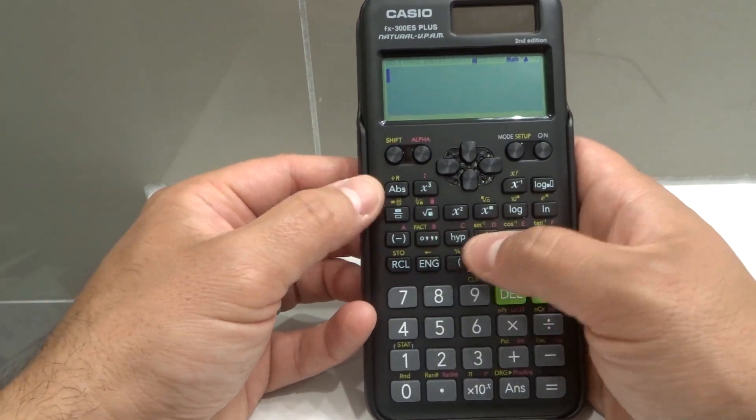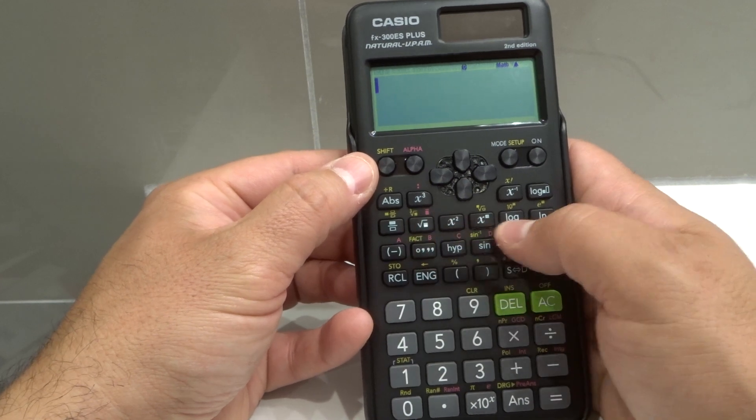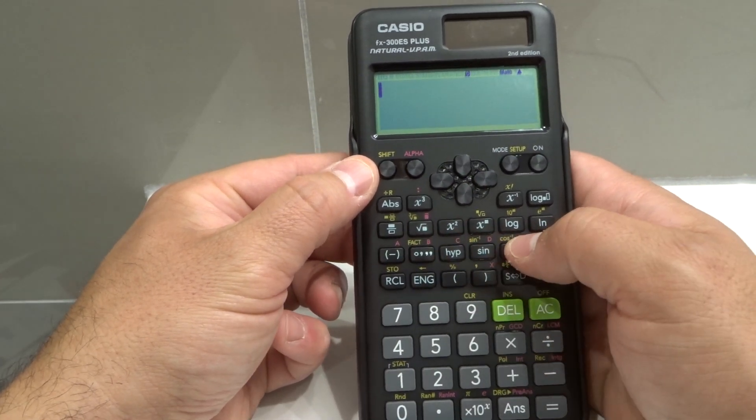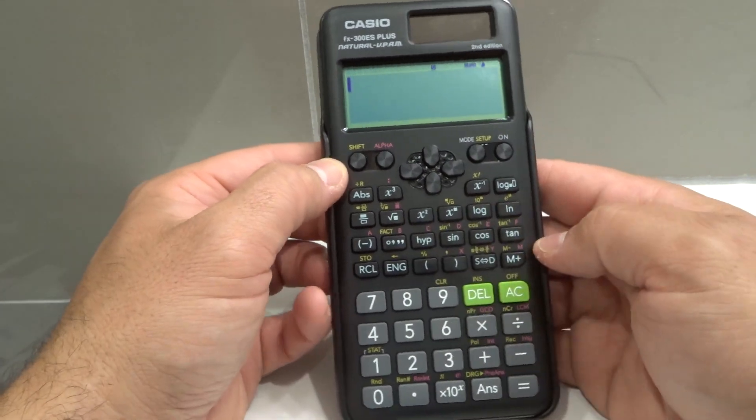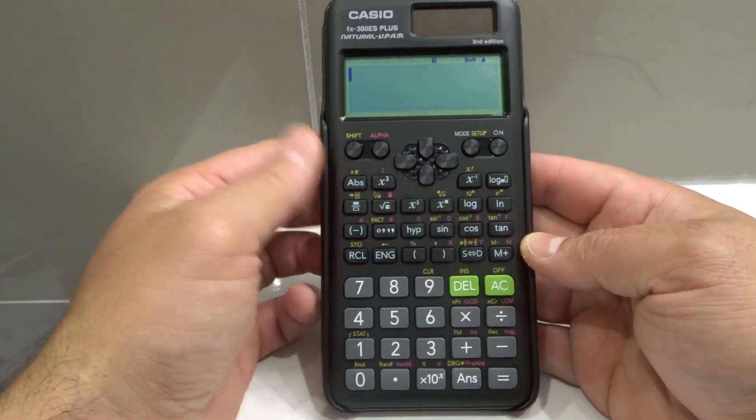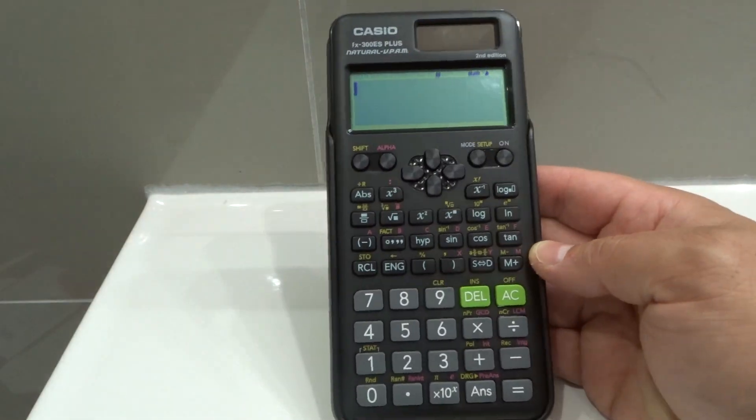And as you can see, it has so many features that in addition to the shift, which is all of the yellow things that you see, you have the alpha, which is all of the red things that you see. So you just have infinite capabilities with this for the most part.